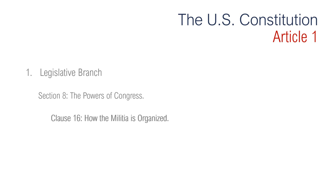Section 8, Clause 16 is about how the militia is organized. This clause gives Congress the power to federalize state militia or National Guard. When called into such service, the National Guard is subject to the same rules that Congress has set forth for the regular armed services. Section 8, Clause 17 establishes the creation of the District of Columbia. It was in 1791 that Congress established the District of Columbia, Washington D.C., as the national capital. Virginia and Maryland had granted the land for the district, but Virginia's grant was returned because it was believed it would not be needed. Today, the district covers 69 square miles.